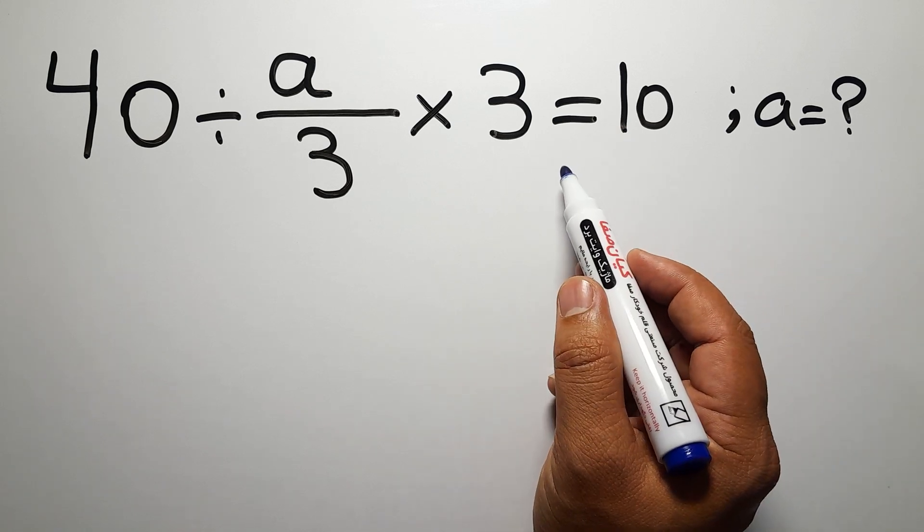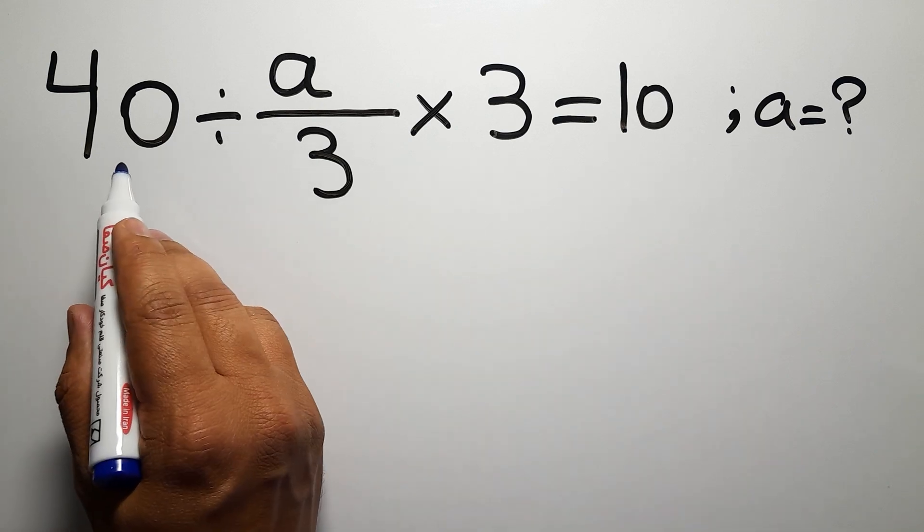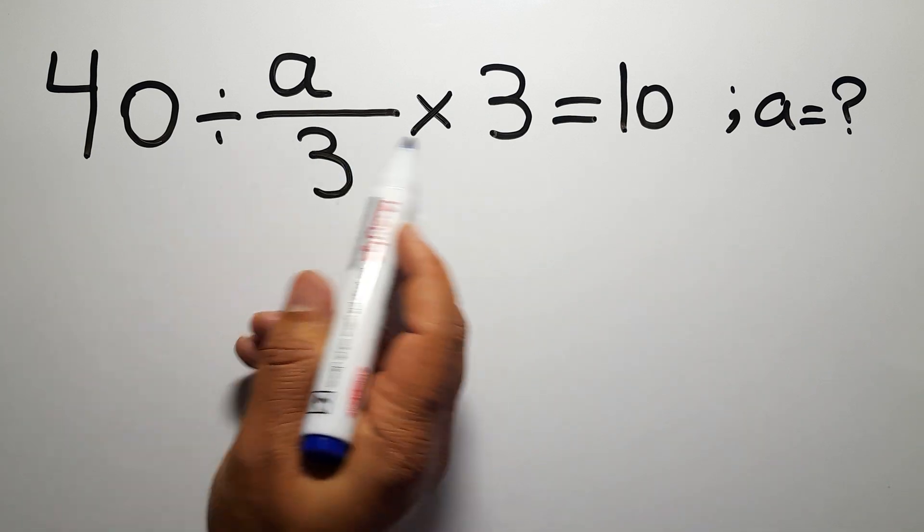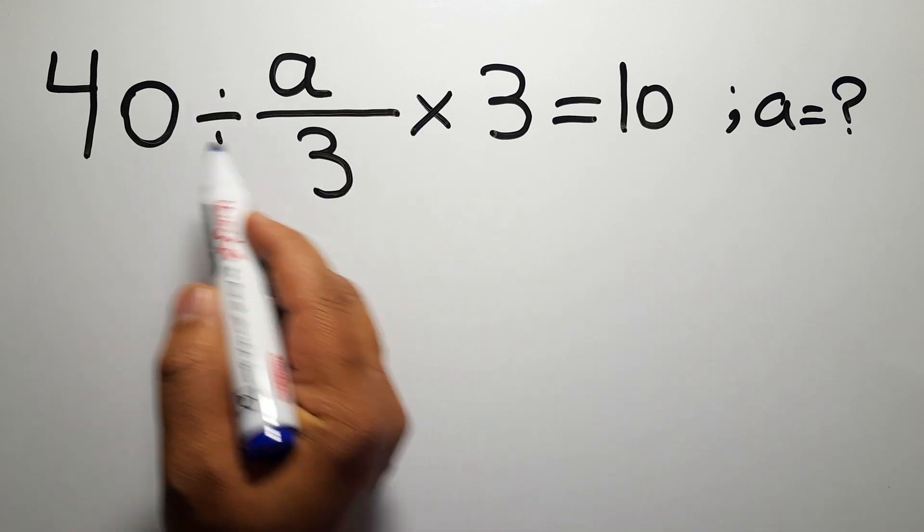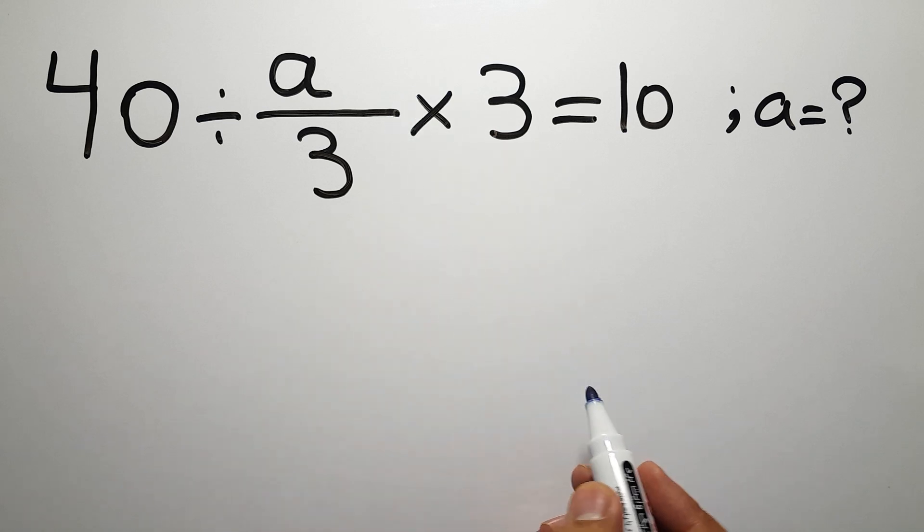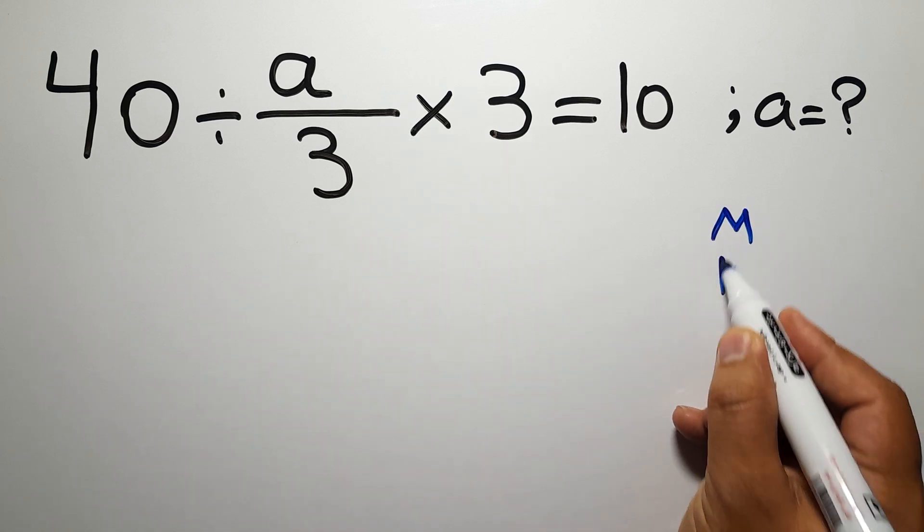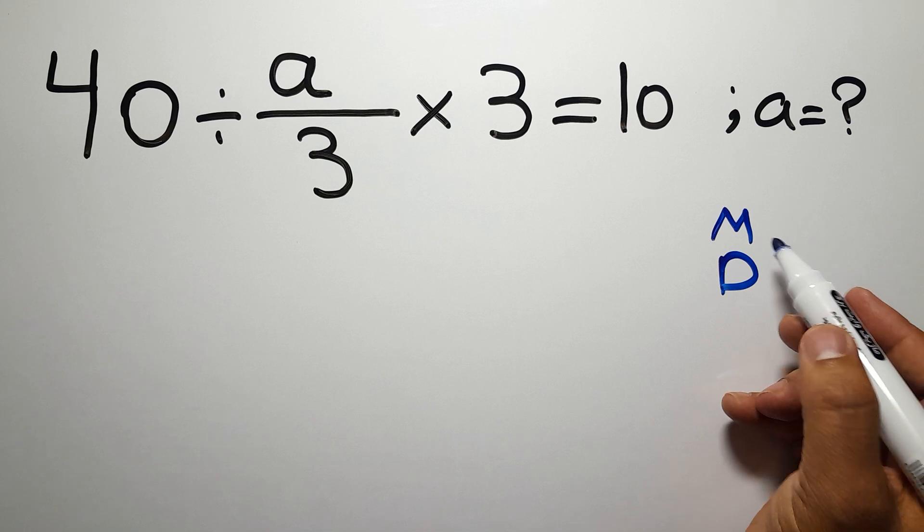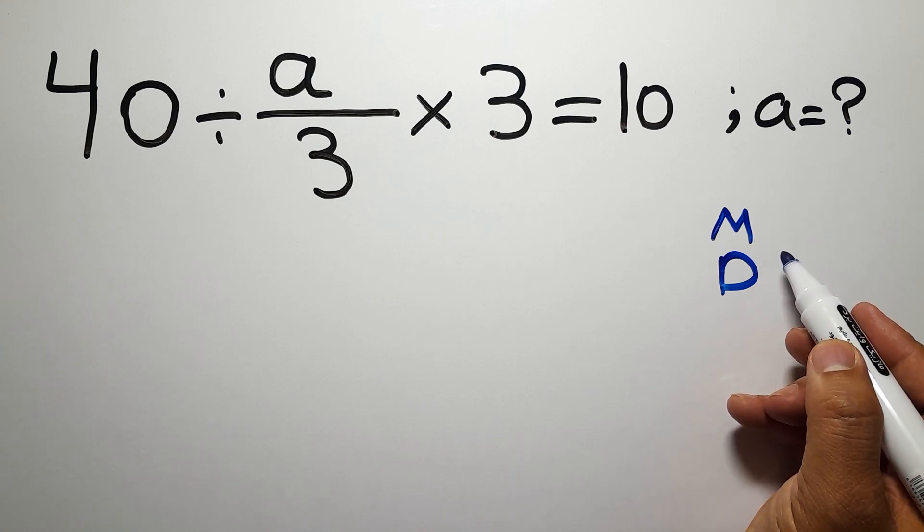Are you ready to solve? Let's get started. On the left-hand side, we have one division and one multiplication. According to the order of operations, multiplication and division have equal priority, and we have to work from left to right.